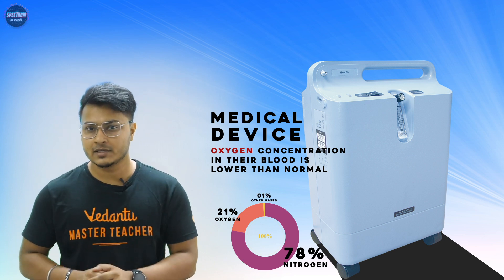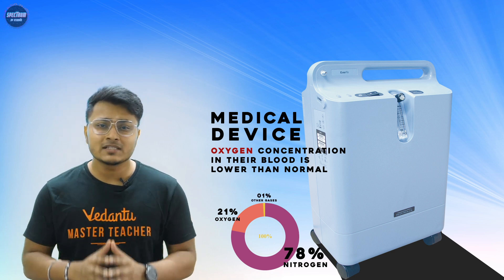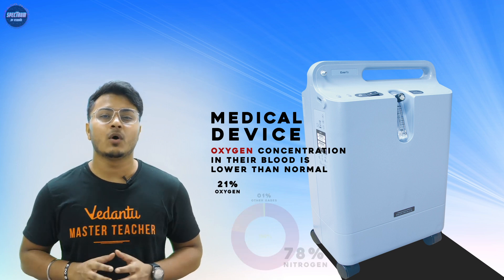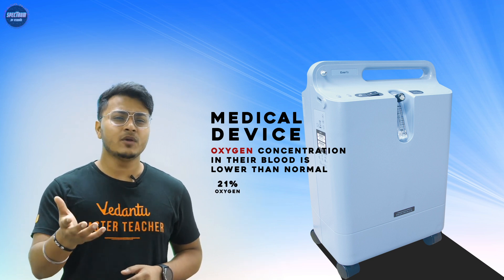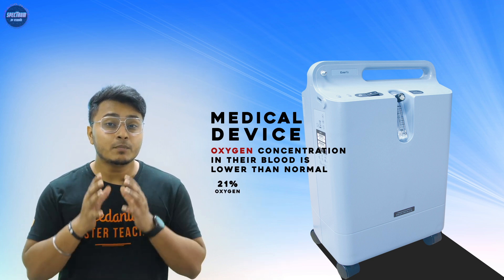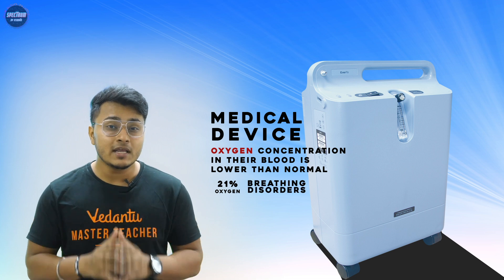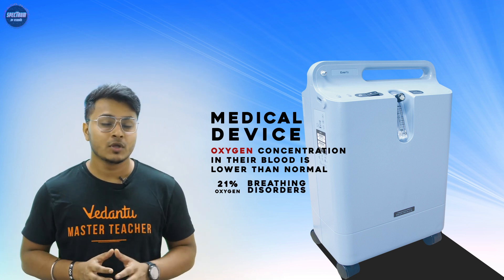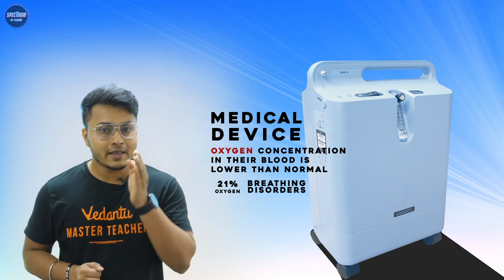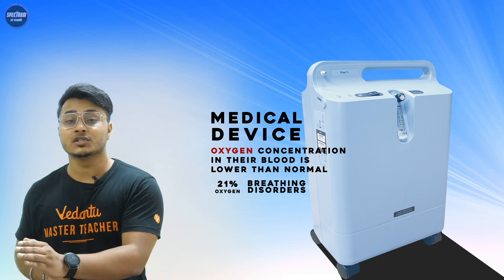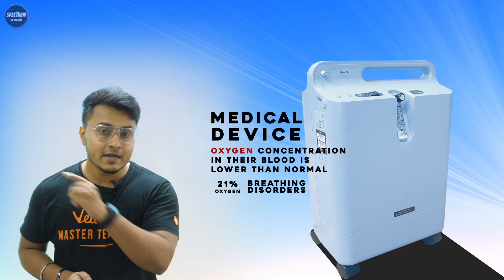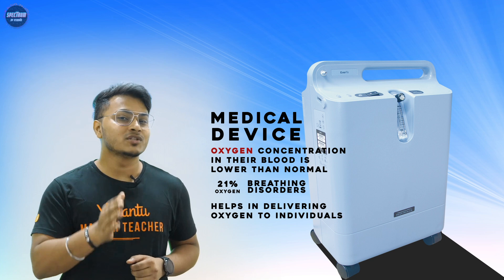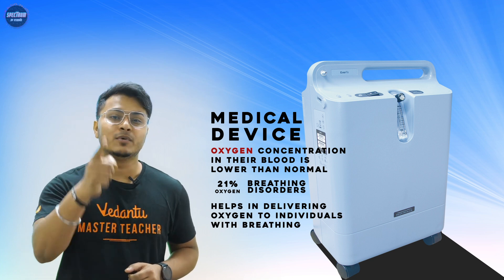Yani hum har saans jo lete hain us mein se 21% oxygen hoti hai jo hamare liye kaafi hoti hai. Lekin kuch person with a condition ise utilize theek tarike se nahi kar paate, which means they need more quantity of oxygen supplied into their body — and that's what oxygen concentrators help us do.